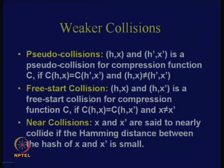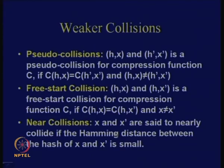The other kind is called a free-start collision — an even stronger attack which says that if h, x and h, x′ are colliding in the compression function. Here both hash values are the same fixed value, meaning you assume control over the chaining variable, which is not again a full-fledged attack on the hash function — it is a weaker collision. The other simple thing is called near-collision: x and x′ are said to nearly collide if the Hamming distance between the hash of x and x′ is small. These kinds of findings — collision attacks — are generally thought to be precursors to full-fledged attacks. If you find a property of this type, people may think they can convert it into an attack.